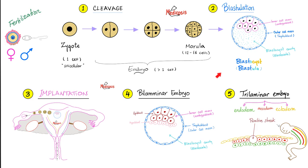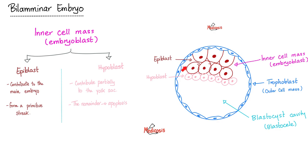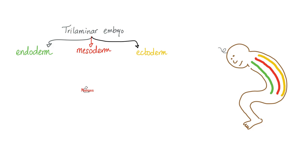Embryology time — here's a quick review. Fertilization, then cleavage (mitotic division), then blastula formation, implantation into the uterine wall, bilaminar embryo, and then trilaminar embryo. The trilaminar embryo consists of endoderm, mesoderm, and ectoderm. The inner cell mass, particularly the epiblast, gives us the trilaminar embryo. Endoderm is on the inside, mesoderm is in between, and ectoderm is on the outside.